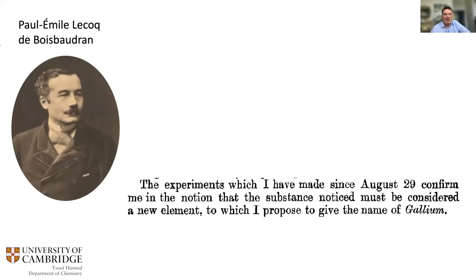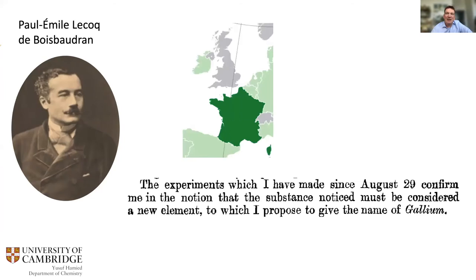Lecoq did not want to name his new element after the appearance of a spectral line, as the previous four elements had been. Instead, he named it after his country — he was a native Frenchman — choosing the Latin form of France: gallium. Or did he? A political magazine was rather skeptical of his motives, suggesting he had simply Latinized his own name: lecoq in Latin is gallus, whence gallium.